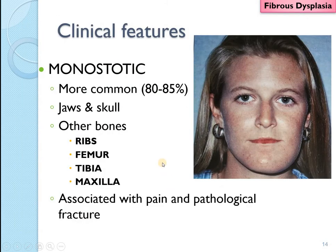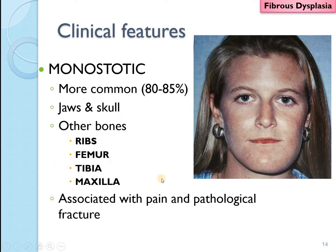Monoostotic fibrous dysplasia is the most common form. The swelling is predominantly on one side, causing disfigurement and lack of symmetry. The patient generally does not seem to be in pain — pain occurs in later stages when impinging on a nerve or associated with a pathological fracture. Jaws and skull are commonly involved; other bones that may be involved include the ribs, femur, tibia, and maxilla.